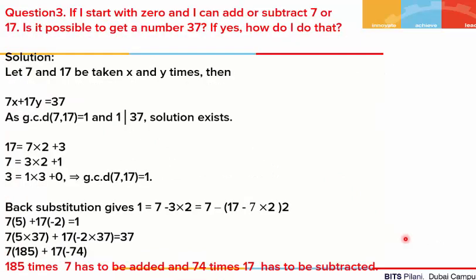Let's move on to the third question. If I start with the number 0 and I can add or subtract 7 or 17, is it possible to get the number 37? And if it is possible, how do we do that? We say that 7 and 17 are taken x and y times respectively. This gives the Diophantine equation 7x + 17y = 37. As the GCD of 7 and 17 is 1, and 1 divides the right hand side, a solution will exist.